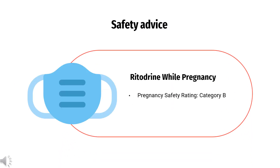Safety Advice: Ritadrine has been assigned to pregnancy Category B by the FDA. Animal studies have failed to reveal evidence of fetotoxicity, and there are no controlled data in human pregnancy. Neonatal hypoglycemia, tachycardia, and ileus have been reported.